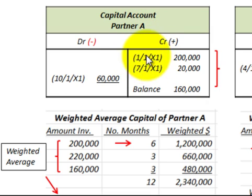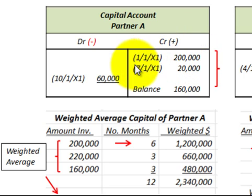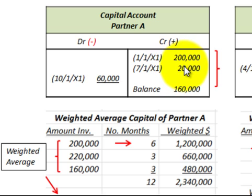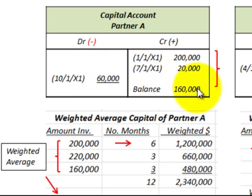For Partner A's capital account: on 1/1/X1 they had $200,000 invested. Then on 7/1/X1, $20,000 was added to the capital account, causing a change at that time. Then on 10/1/X1 there was a $60,000 reduction, leaving a balance of $160,000.